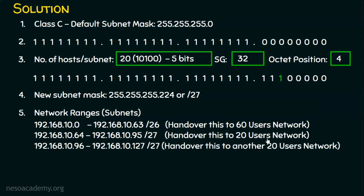The third subnet also requires 20 users, so nothing changes in step 3. The third subnet starts at 192.168.10.96; adding 32 gives 128, so it ends at 192.168.10.127 /27. We hand this range to the second 20-users network. We have now addressed the 60-users network and both 20-users networks.